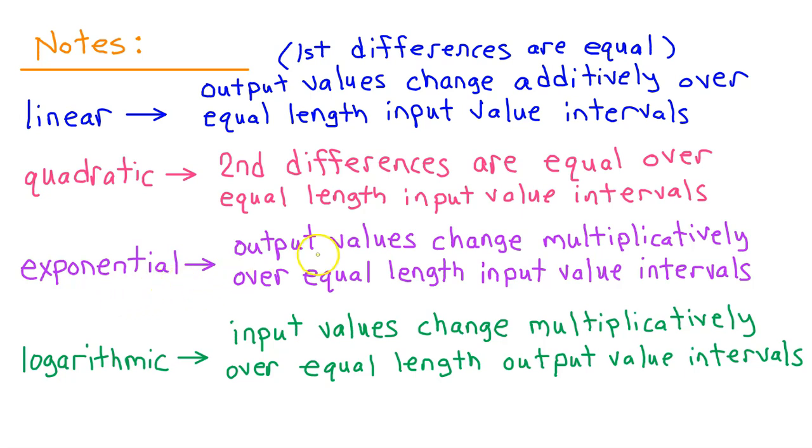A quadratic model will be best if the second differences are equal over equal length input value intervals. An exponential model will be best if the output values change multiplicatively over equal length input value intervals. Finally, a logarithmic model is best under the opposite set of circumstances if the input values change multiplicatively over equal length output value intervals.